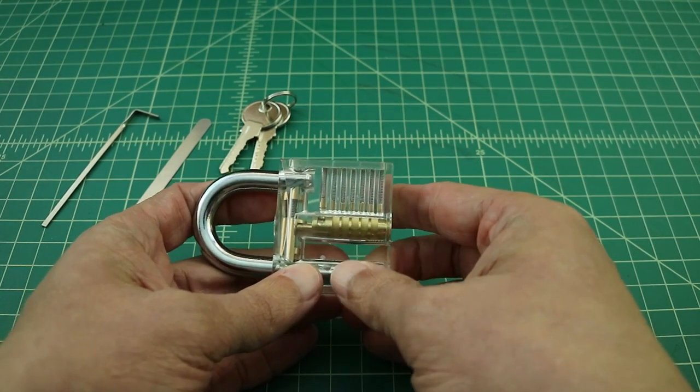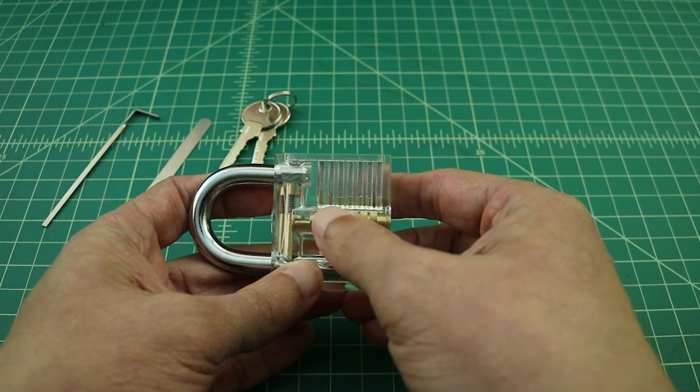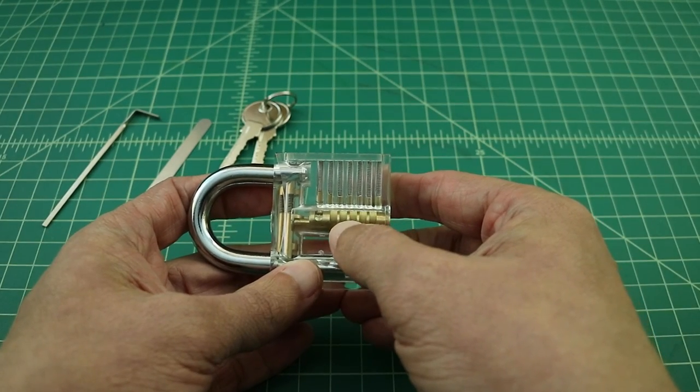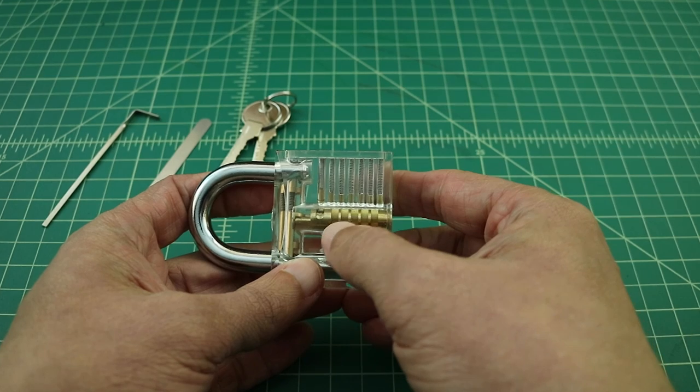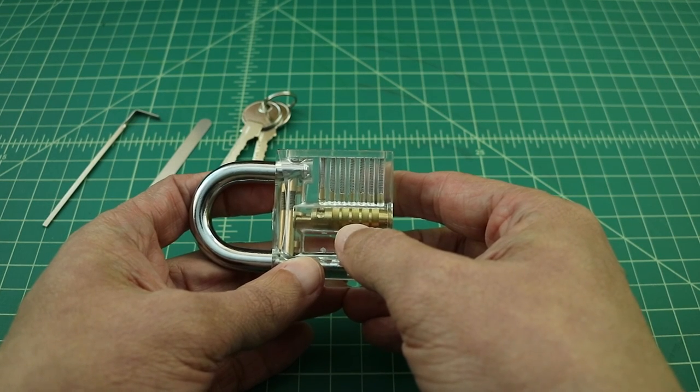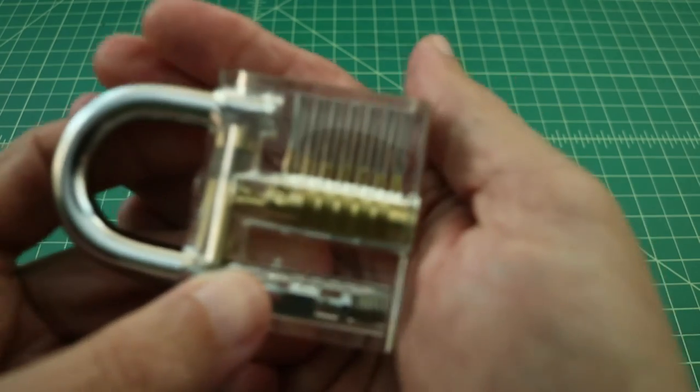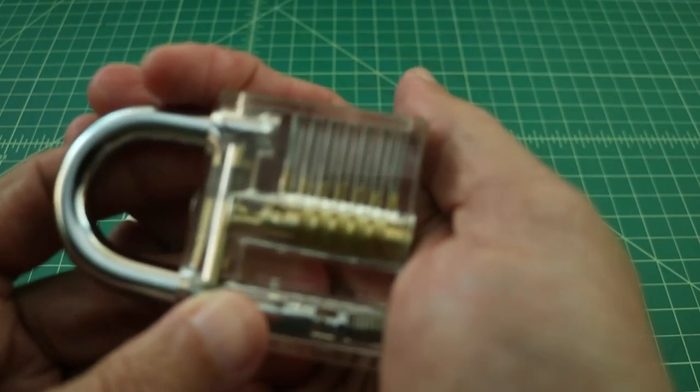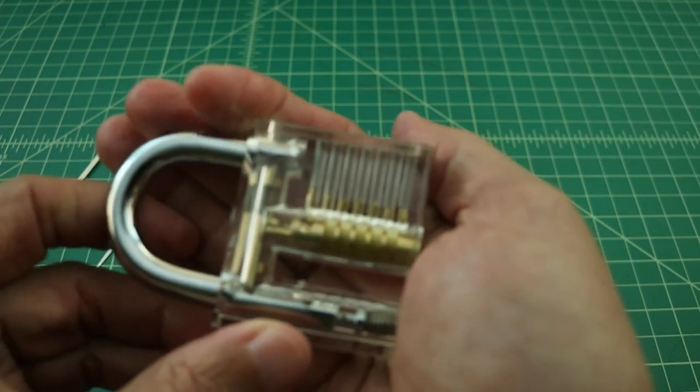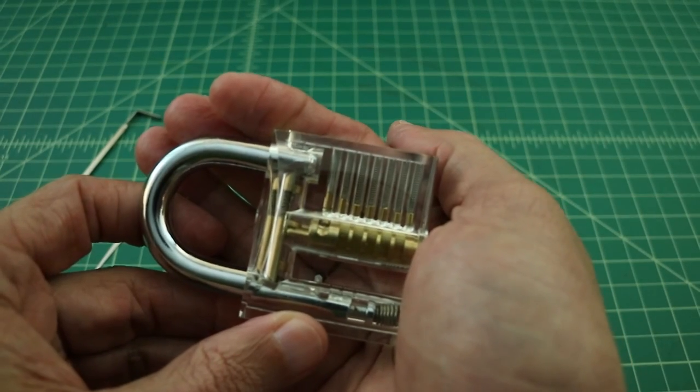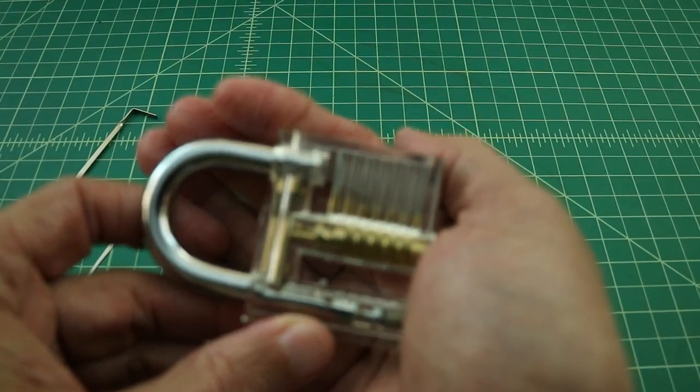What's handy about this lock is it's a seven pin lock, and you can see the inside mechanics of the lock. You can see each pin and how it relates to the cylinder inside. You can also see the springs behind it. This is a little bit of an easy lock to pick, given that the pins in here are just straight pins. There's no security pins.